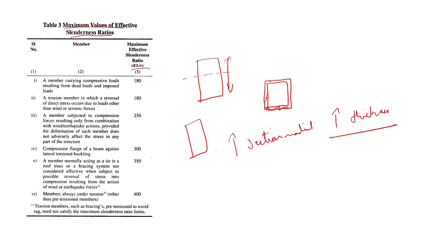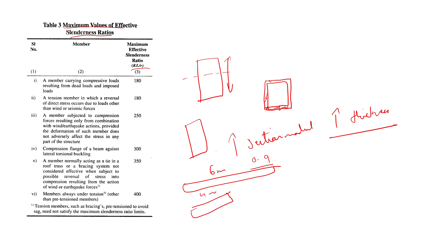To get the slenderness ratio into a proper range, you can reduce the unsupported length. For example, if a section is failing at six meters with a ratio of 0.9, you can decrease the length to four meters. However, in the industry you usually go with the maximum length and instead increase the depth.